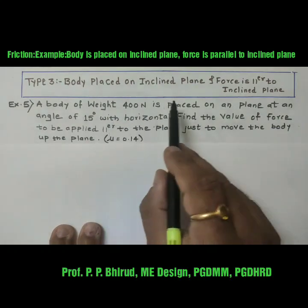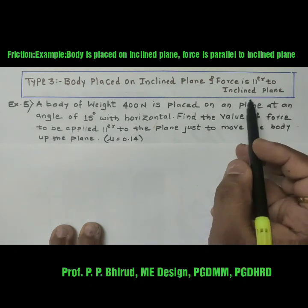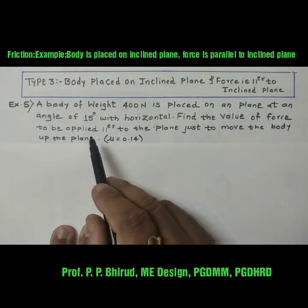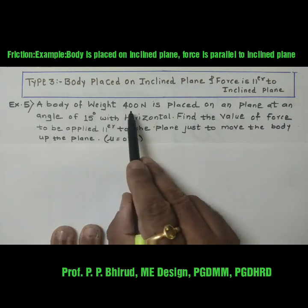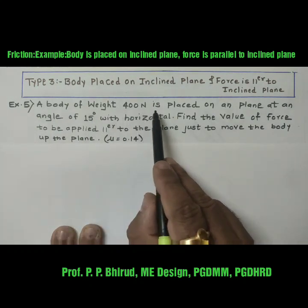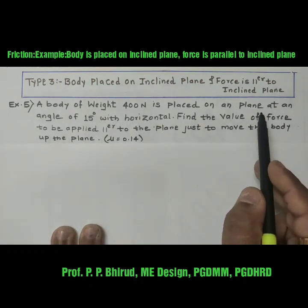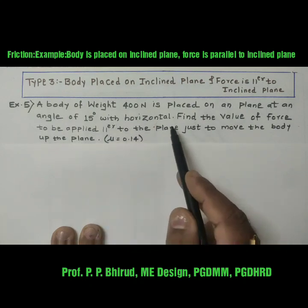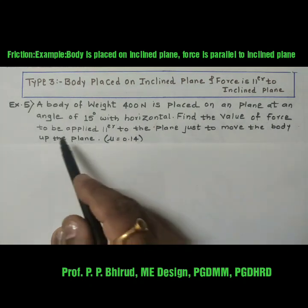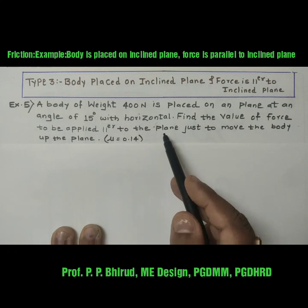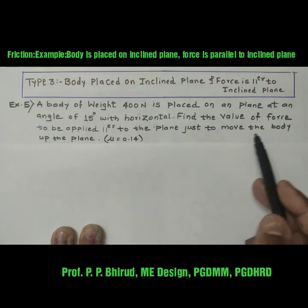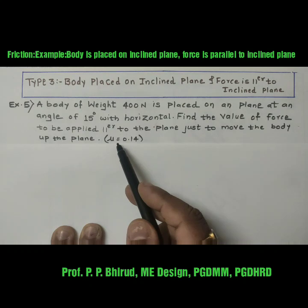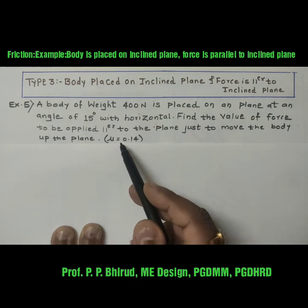The body is placed on the inclined plane and force is parallel to the inclined plane. Here we have taken one example. A body of weight 400 Newton is placed on a plane at an angle of 15 degrees with the horizontal. The coefficient of friction mu is 0.14.